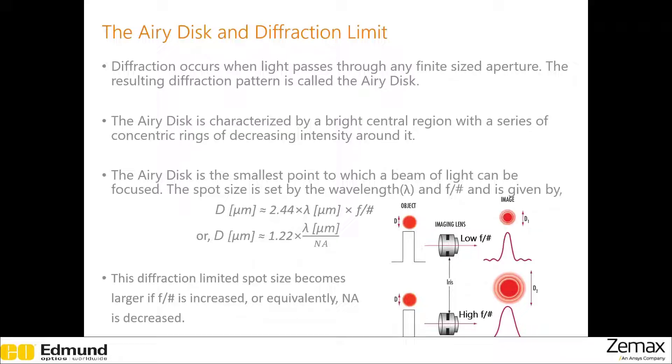This essentially defines the smallest point to which the light can be focused. This relationship here tells us how the spot size is related to the wavelength and the f-number, or equivalently the numerical aperture.